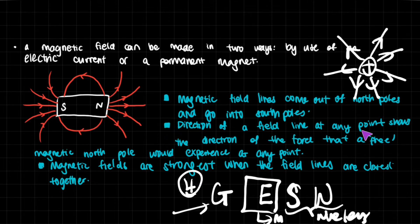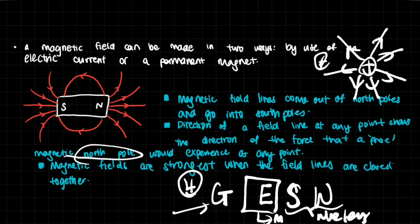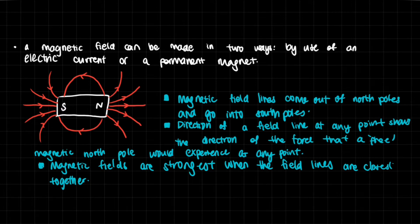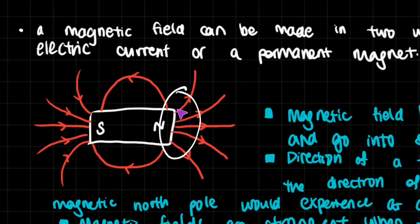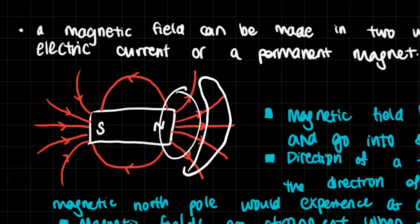The direction of a field line at any point shows the direction of the force that a free magnetic north pole would experience — just like with electric fields, where the direction of a force line equals the force felt by a positive charge in the field. Magnetic fields are strongest where the field lines are closest together. The closer you are to the poles, the stronger the magnetic field; the further away, the weaker it is.